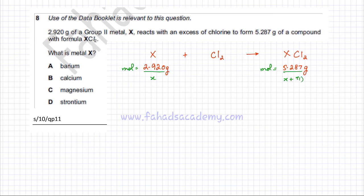I found the moles in terms of X. Now these moles should be equal because it's 1:1 ratio. I'm going to make them equal: 2.920 grams divided by X equals 5.287 grams divided by X plus 71. I'm going to solve this for X and find out what X is.